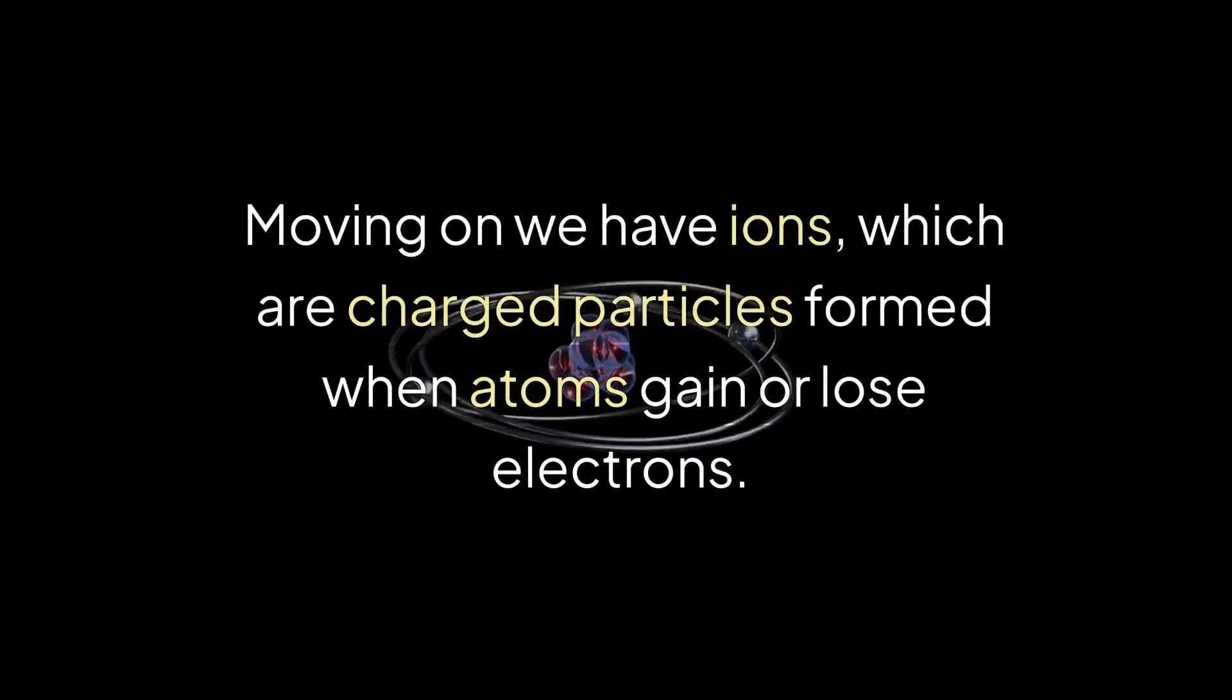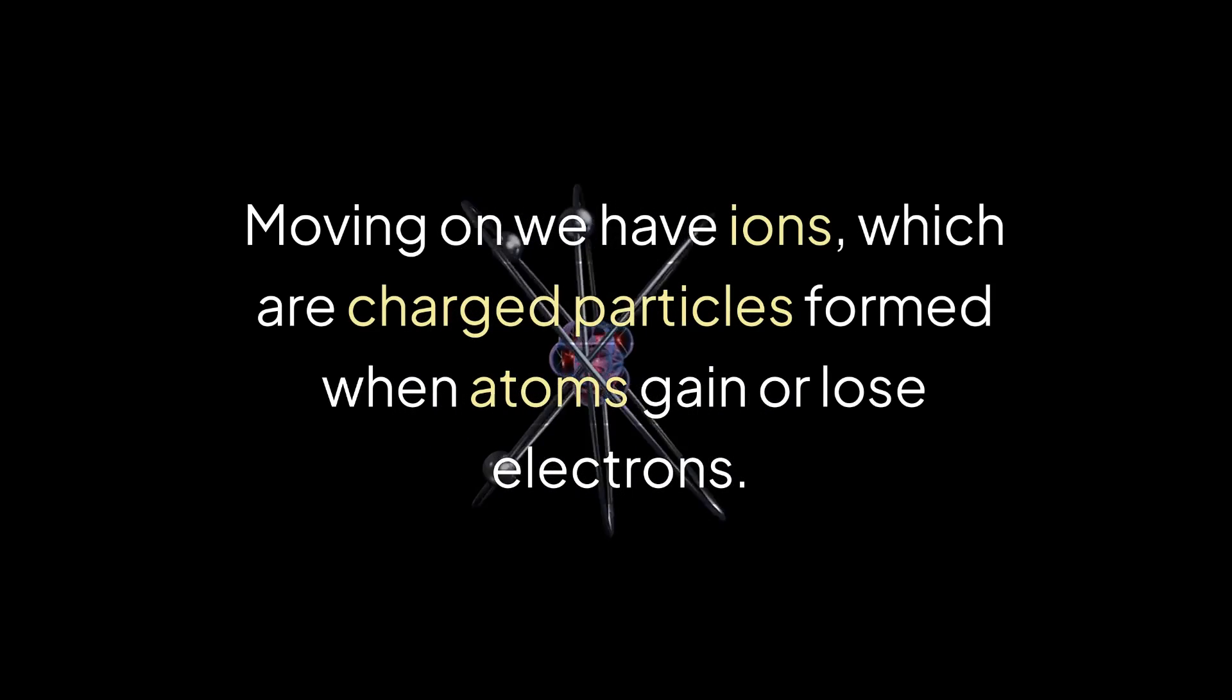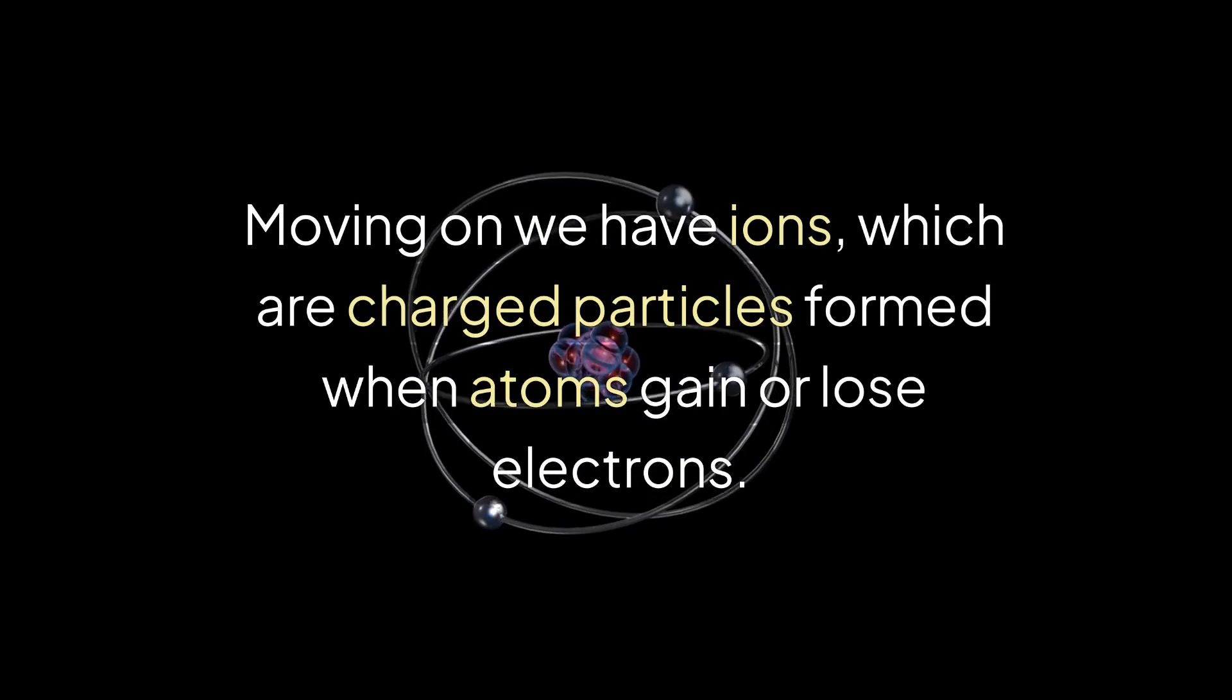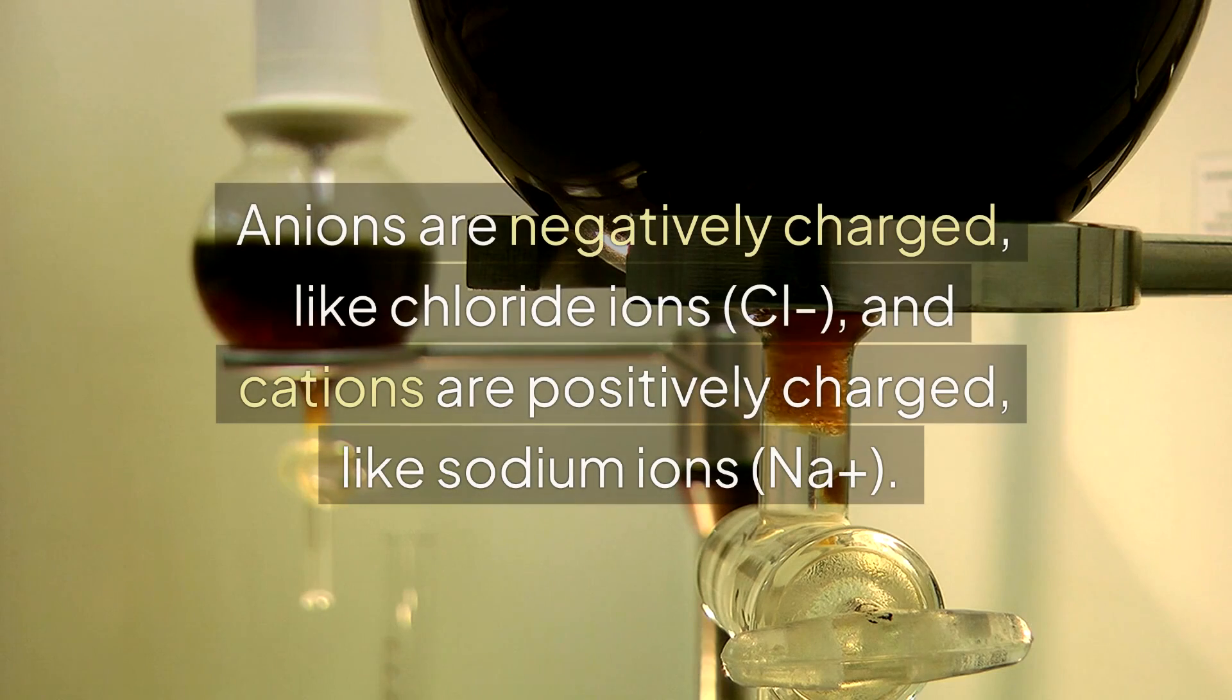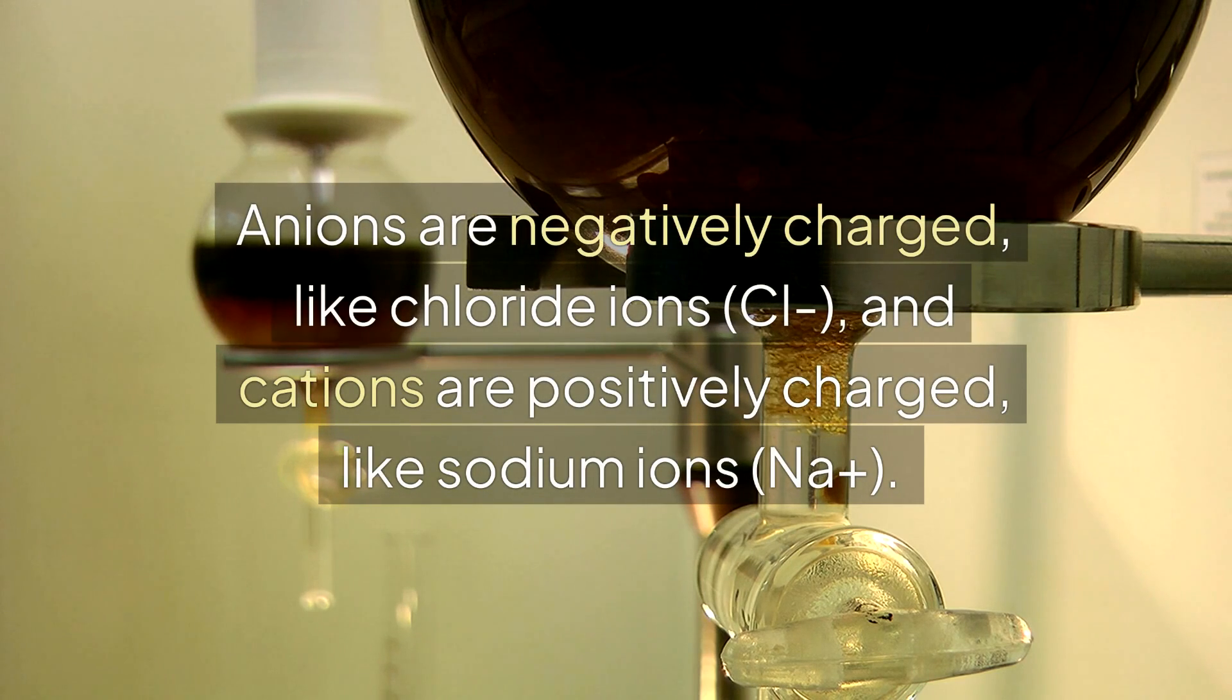Moving on, we have ions, which are charged particles formed when atoms gain or lose electrons. Anions are negatively charged, like chloride ions, Cl-, and cations are positively charged, like sodium ions, Na+.